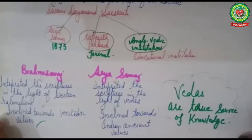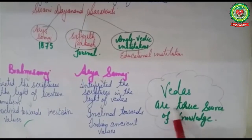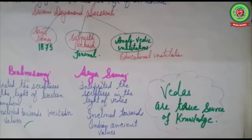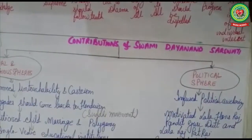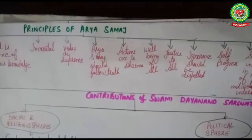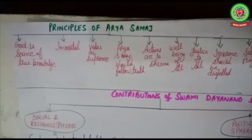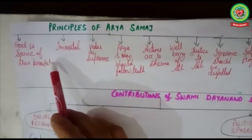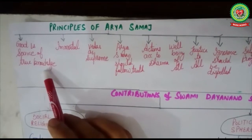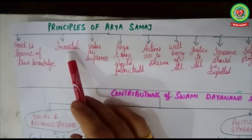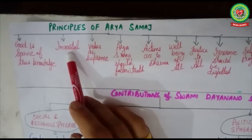Arya Samaj believed that the Vedas are the true source of knowledge. Now we'll go through the principles of Arya Samaj. The first principle is that God is the source of true knowledge — by saying this, Arya Samaj discarded the idea of priesthood. The second principle is that God is immortal; he has never taken birth and will never die.